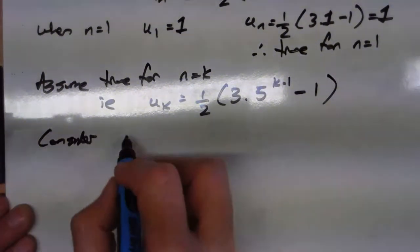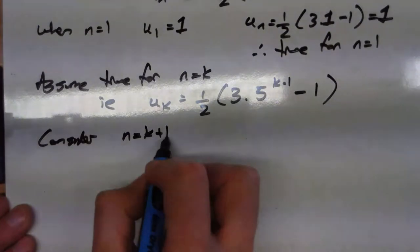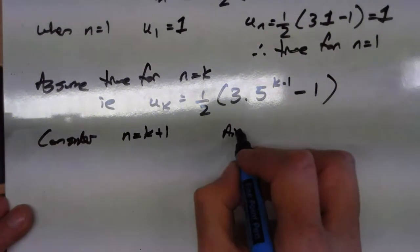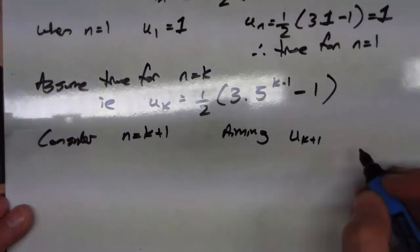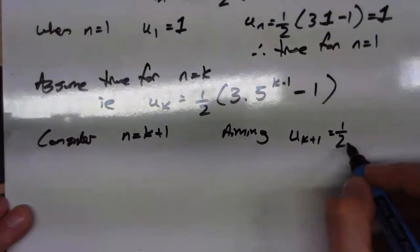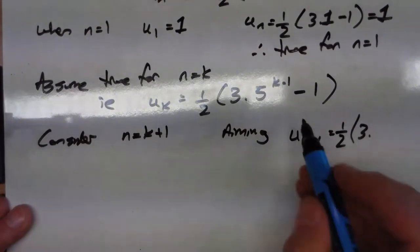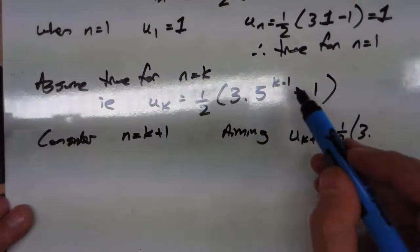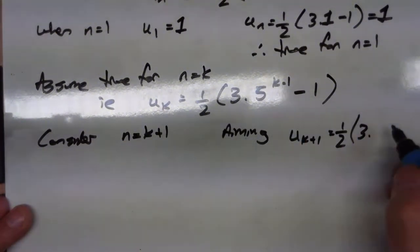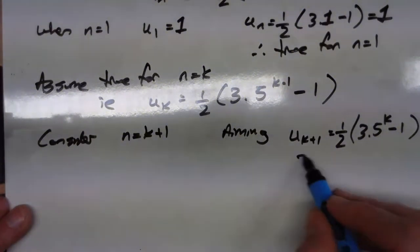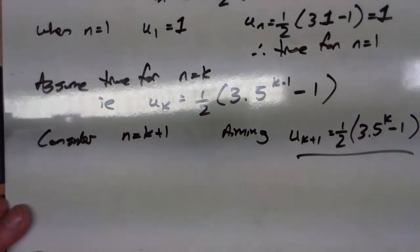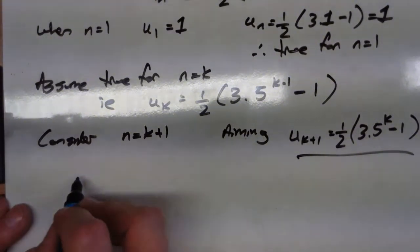So consider n equals k plus 1. We are aiming for, this is our aim, we think the next one's going to be a half lots of 3. Stick a k plus 1 in there, you get k plus 1, take away 1. So we think it's just going to be 5 to the k, take away 1. That's what we're hoping to find out, but let's see what we get.